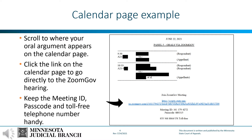Please also make note of the toll-free telephone number, meeting identification number, and passcode, and keep these handy. In a worst-case scenario, if you are unable to get your computer to cooperate, you can call in by telephone and present your oral argument that way. If someone runs into technology issues during argument, the presiding judge will instruct the marshal to stop the countdown timer and work with you to resolve the issue as quickly as possible. However, if the issue cannot be resolved, you may need to present your oral argument via telephone.